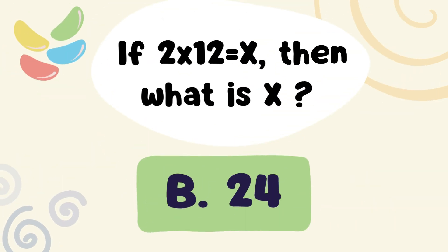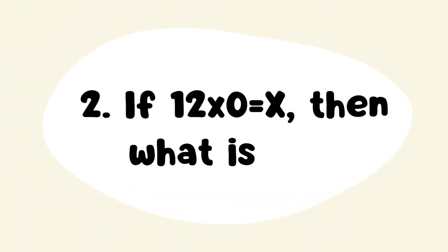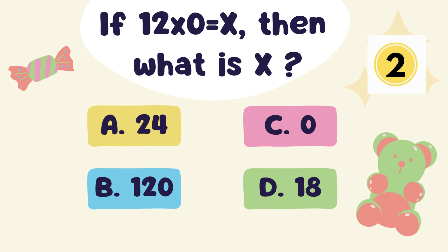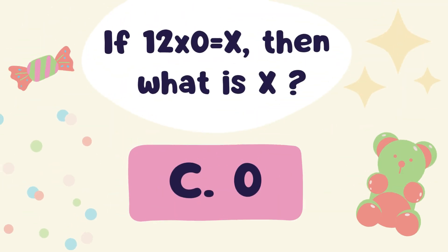24. Question: If 12 x 0 is equal to x, then what is x? Answer: Option C.